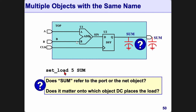Set_load applies a capacitance of 5 on the object sum — we'll cover this tomorrow. The value 5 could be picofarads or femtofarads depending on your library. So what is 'sum' referring to: is it the port or is it the net?